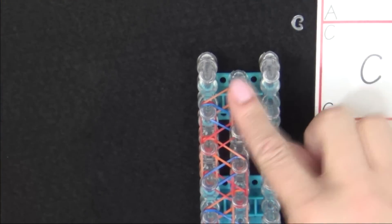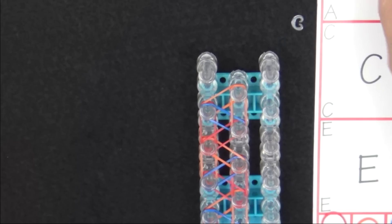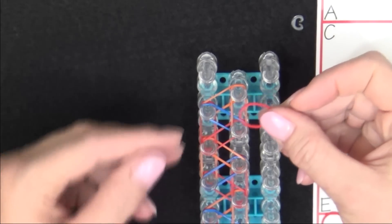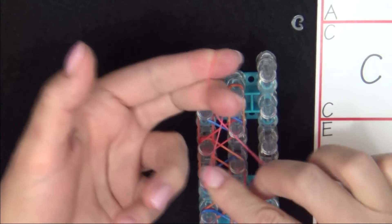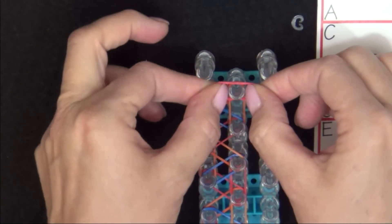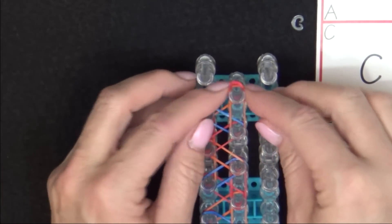Now we'll need to place a cap band on this pin. So grab an A colored band. Place two fingers through each side. Twist it into a figure 8. Turn it back upon itself. And place it on that last pin.